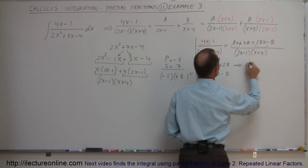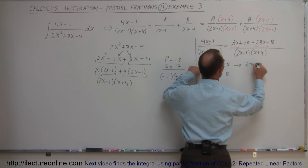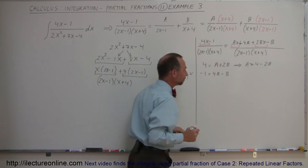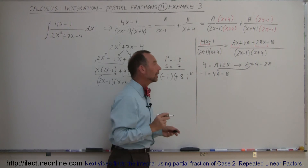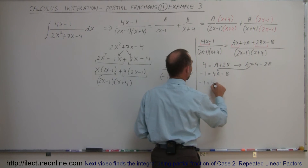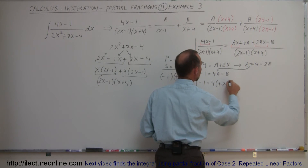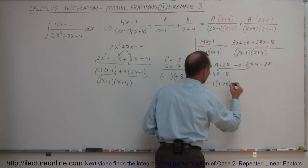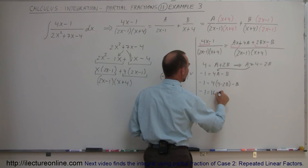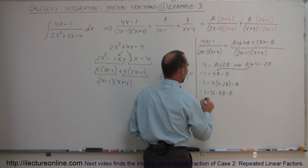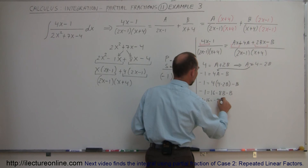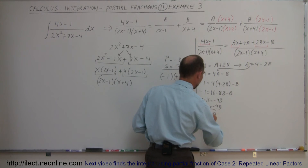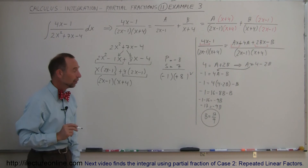From the first equation I write a = 4 - 2b. Substituting into the second equation: -1 = 4(4 - 2b) - b, which gives -1 = 16 - 8b - b. Moving 16 across: -17 = -9b, so b = 17/9.